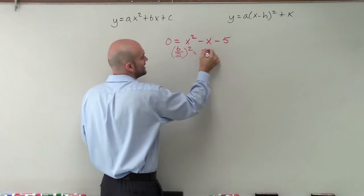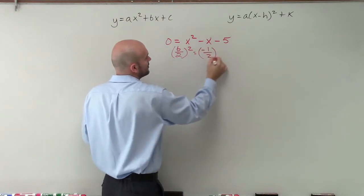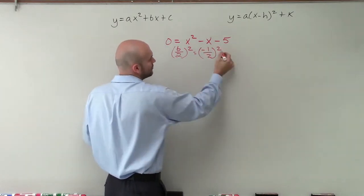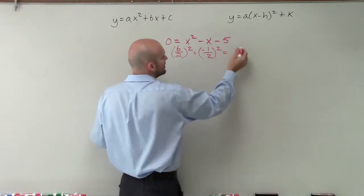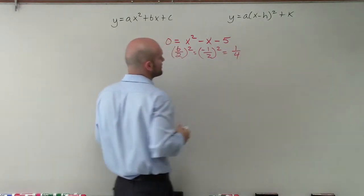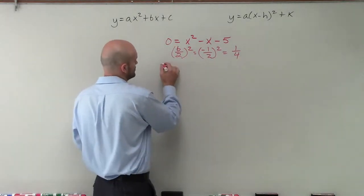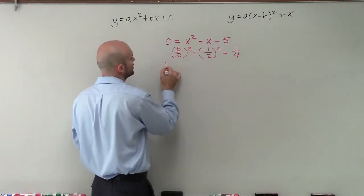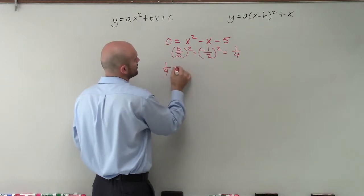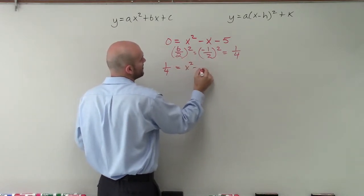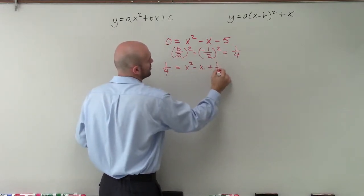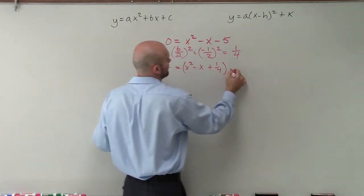Well, in this case, I have a negative 1 divided by 2, and then I need to square that. Well, negative 1 divided by 2 is now going to be a positive 1 fourth. Now, we need to make sure we add that onto both sides. So I'm going to add 1 fourth onto both sides. So 1 fourth plus 0 is just going to be 1 fourth equals x squared minus x plus 1 fourth minus 5.